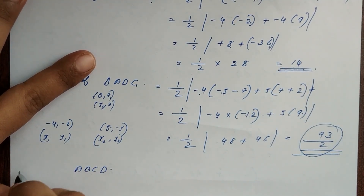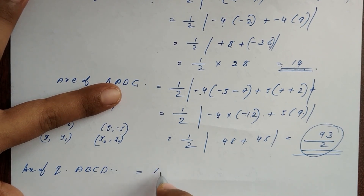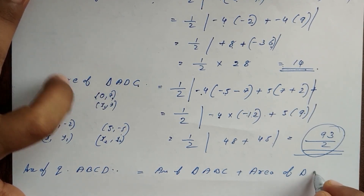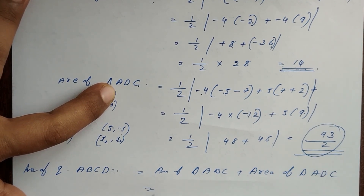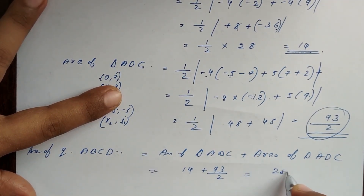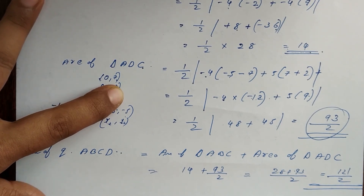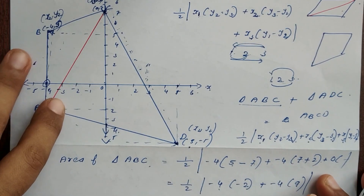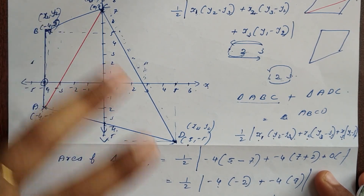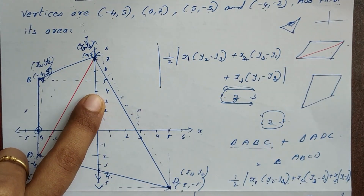Area of quadrilateral ABCD equals area of triangle ABC plus area of triangle ADC. This equals fourteen plus ninety-three divided by two, which is twenty-eight plus ninety-three divided by two, that equals one hundred twenty-one divided by two. So this is the area of the quadrilateral.